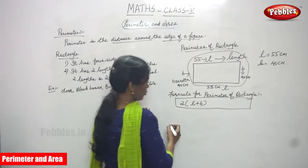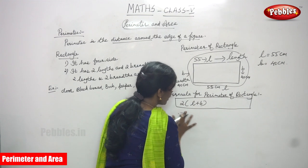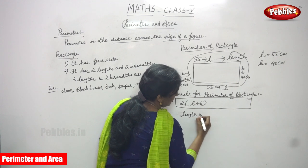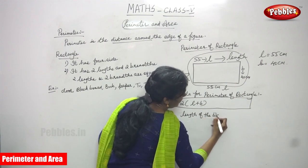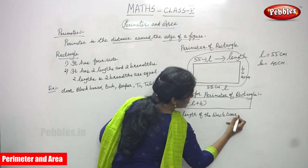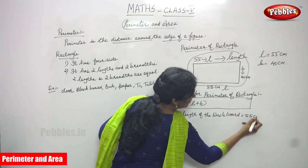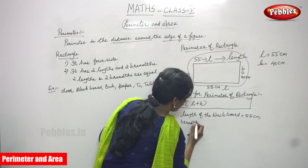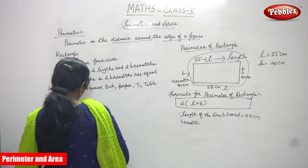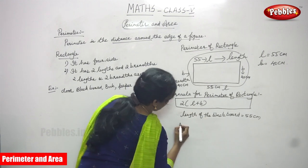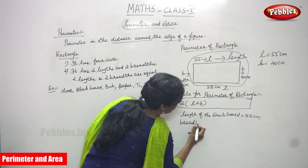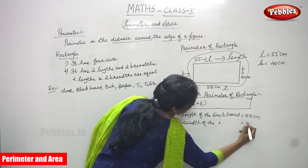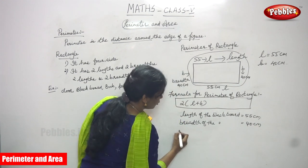Now let's solve the problem. The formula is 2 into (L plus B). Write: length of the blackboard equals 55 centimeters, and breadth of the blackboard — B-R-E-A-D-T-H — equals 40 centimeters.